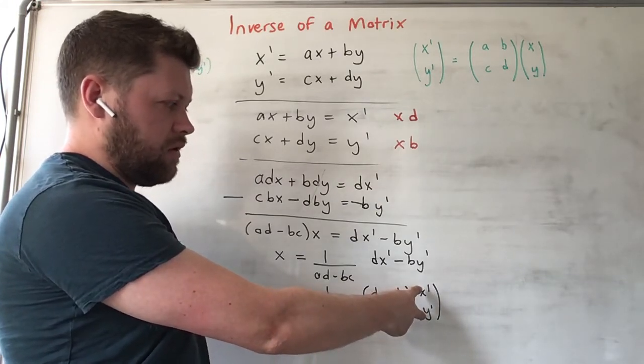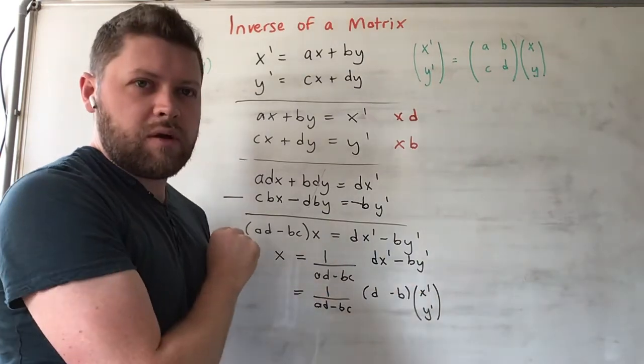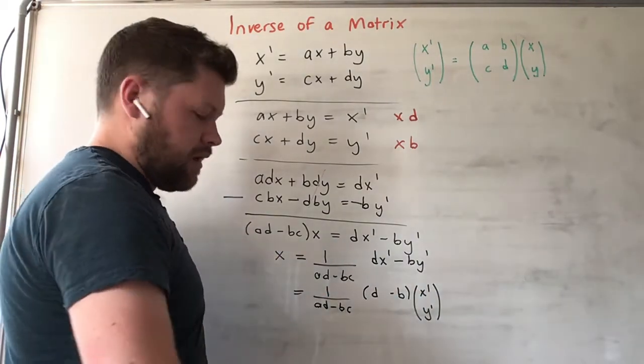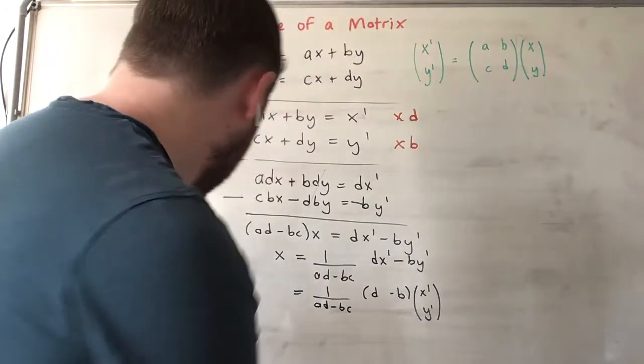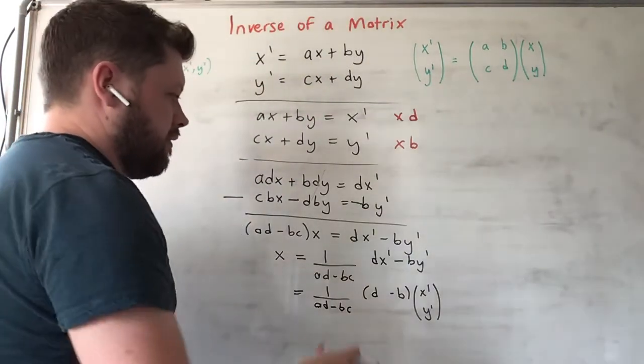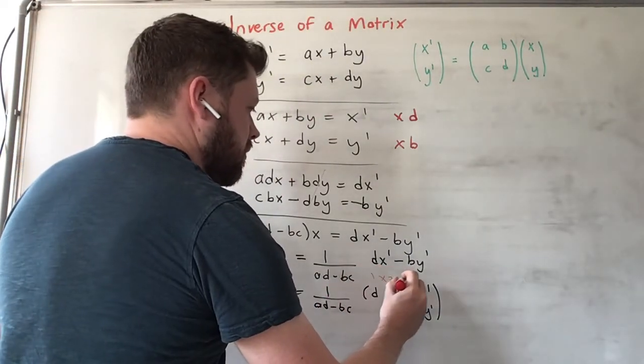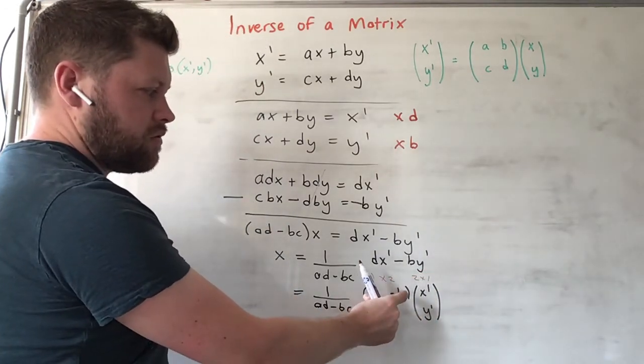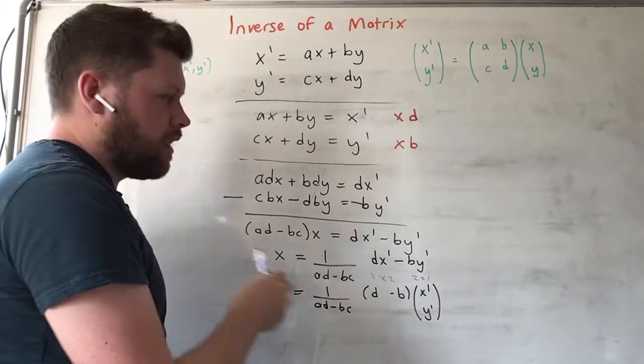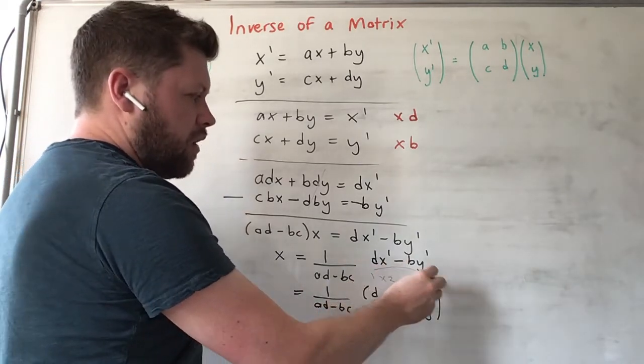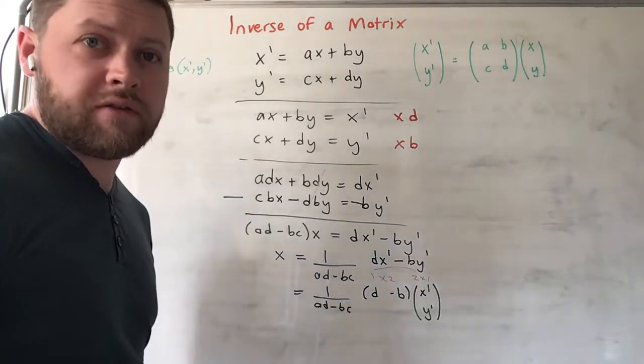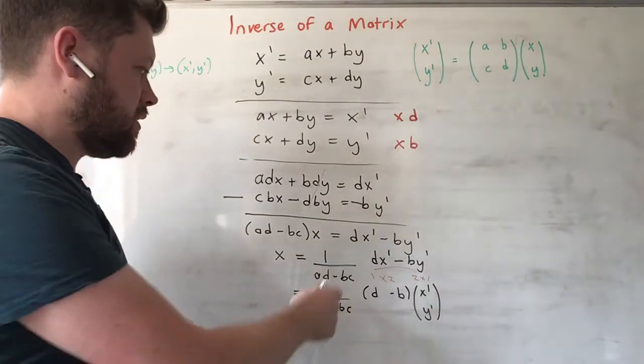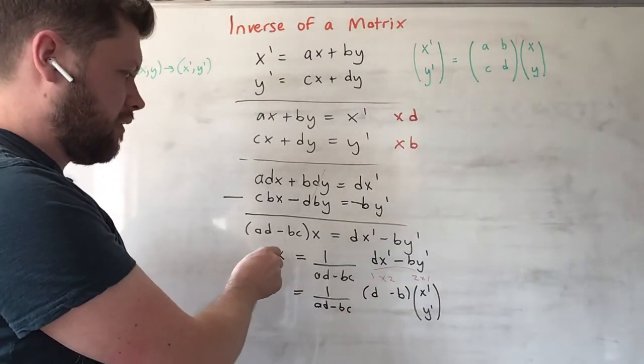So I wrote this in terms of matrix notation. This is a 1 by 2 and this is a 2 by 1. We wrote it that way because you must have these two numbers the same, so that's why I had to write it in this form, and then the answer you get is a 1 by 1, which is just a regular scalar number, and that's correct because x needs to be just a scalar number.